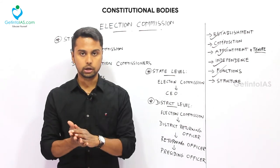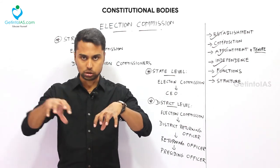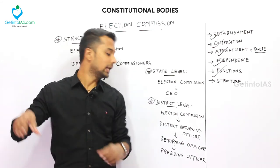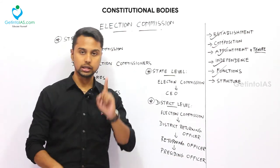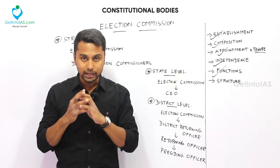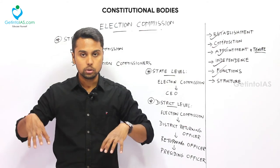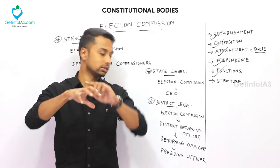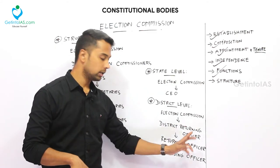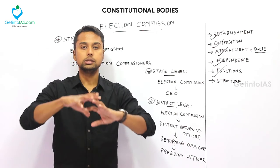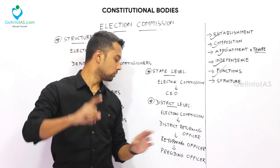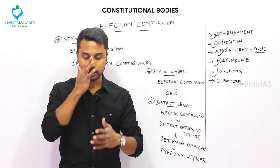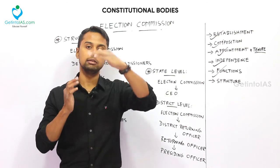For every election booth, the head is known as the Presiding Officer. There are many election booths within a constituency — for every booth there will be one Presiding Officer. For one constituency as a whole, the head is the Returning Officer. For all constituencies in a district, the overall head is the District Returning Officer, who is nothing but the Collector.